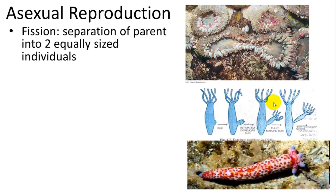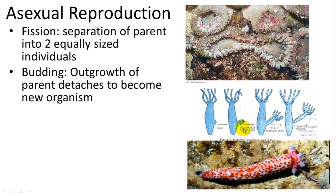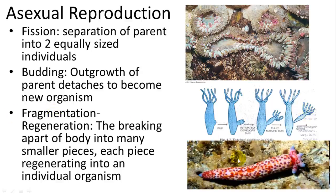Asexually, many animals can reproduce through fission — a separation of a parent into two equally sized individuals, seen in sea anemones. There is also budding, where a smaller portion grows out from the parent and breaks off to become a new organism. Fragmentation occurs in sea stars — as long as the sea star retains the central disk, it can form a new organism. A single leg of a sea star can grow one, two, three, four, five new legs after being separated.